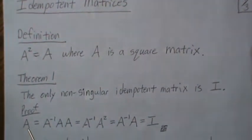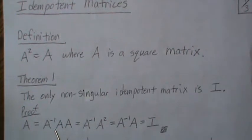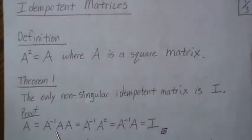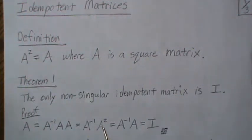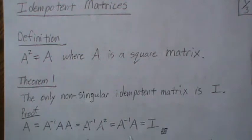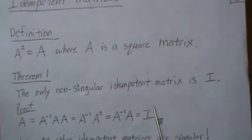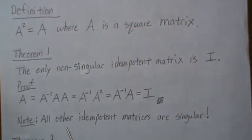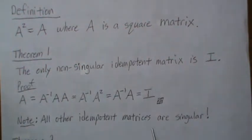If we let A equal the identity matrix, then A squared equals A because it's idempotent, so A is I. One note is that all other idempotent matrices are singular.